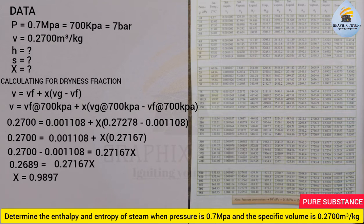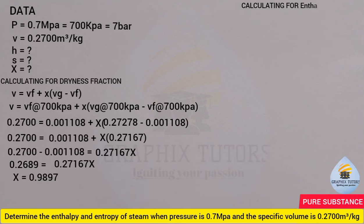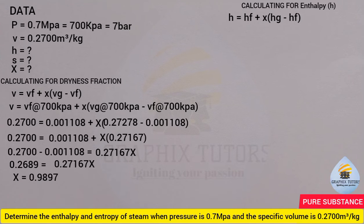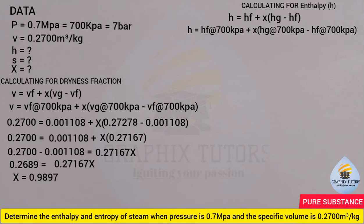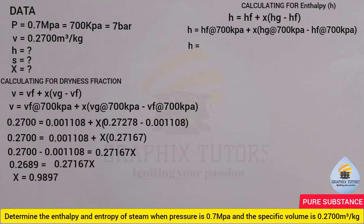Now calculating the enthalpy h. The relationship is: h equals hf plus x times (hg minus hf). Rewriting with our pressure: h equals hf at 700 kPa plus x times (hg at 700 kPa minus hf at 700 kPa). If your steam table uses bar, use 7 bar instead of 700 kPa.